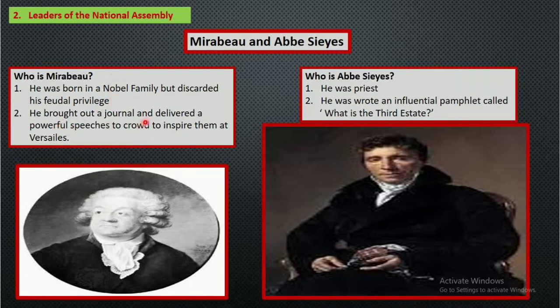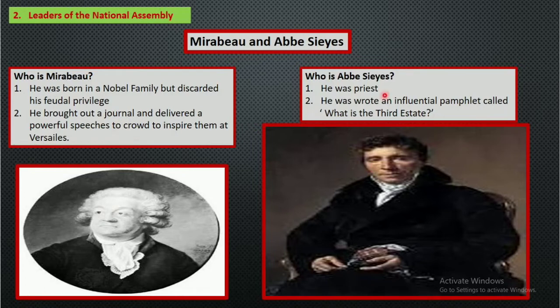Mirabeau brought out a journal and delivered powerful speeches to the crowd to inspire them at Versailles in the tennis court. He believed that privilege should not come by birthright. Abbé Sieyès was a priest who made a lot of pamphlets to spread his ideas. These were the important people who spread ideas about what the third estate was.